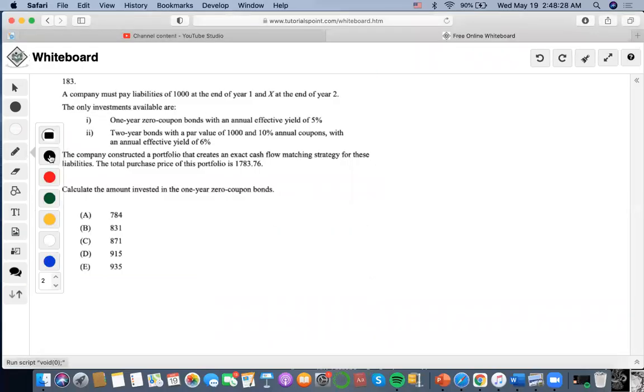Okay, so for this problem it says that a company must pay liabilities of a thousand at the end of year one and X at the end of year two. These investments are available: one-year zero coupon bonds with a yield of 5%, and two-year bonds with par value of a thousand and 10% annual coupons. The company constructed a portfolio that creates an exact cash match for these liabilities. The total purchase price of this portfolio is this amount.